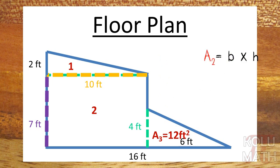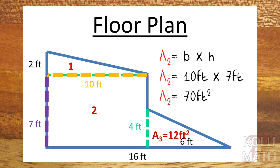Let's move on to number two. Area of number two would be base times height. So we see that the base is 10 and the height is seven. Multiply those together. That gives us 70 square feet. Okay. Cool.